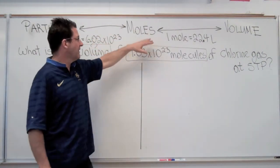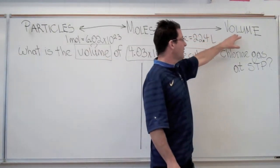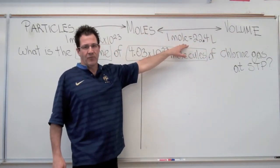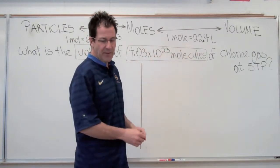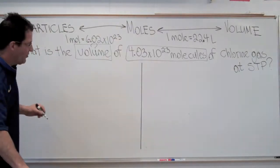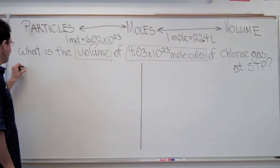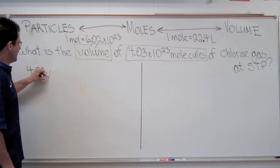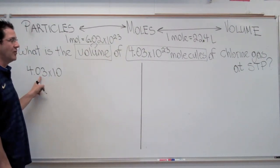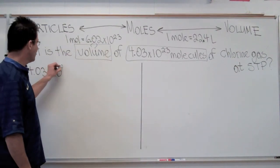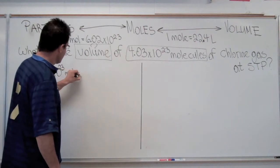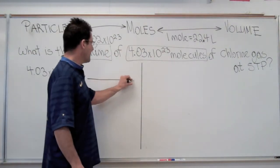In this case, molecules. Then we'll go from moles to volume using the molar volume of a gas, which is one mole equals 22.4 liters. So we have a two-step problem here, and the first thing we should always do is write down what we've been given. We have been given 4.03 times 10 to the 23rd molecules of chlorine gas.